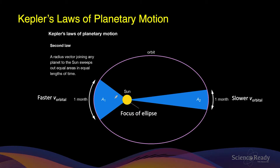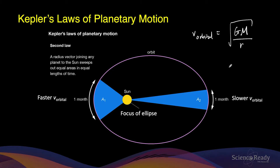When the orbital radius is smaller, the orbital velocity of the planet will be faster. This is because the orbital velocity is given by the square root of GM, where capital M is the mass of the Sun, divided by the orbital radius. If the orbital radius is smaller, then this will give us a faster orbital velocity. Vice versa, on the other side of the elliptical path, when the radius is longer, the orbital velocity is slower.